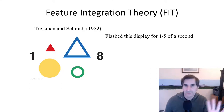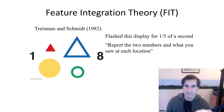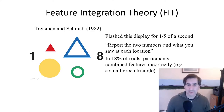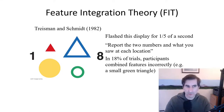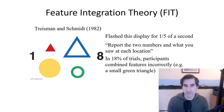To prove that we only pull features together if we pay attention, she flashed a display for a fifth of a second on screen, and participants were asked to report the two numbers they saw at each location. In 18% of trials, participants combined features incorrectly. When they were not paying attention to the triangles, squares, and colors — blue, red — they incorrectly put the features back together. For example, some people said, 'I remember seeing a green triangle,' meaning they did not pull features together properly.